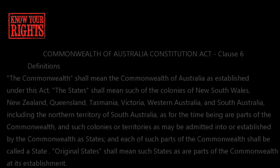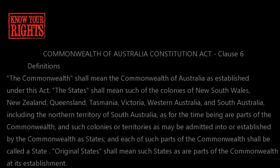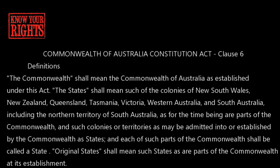Let's today have a look at Clause 6 of the Commonwealth of Australia Constitution Act 1900. Clause 6 says: definitions. The Commonwealth shall mean the Commonwealth of Australia, as established under this Act.